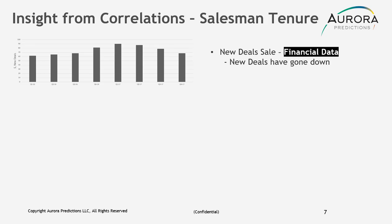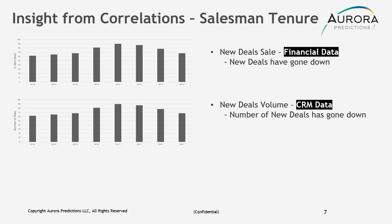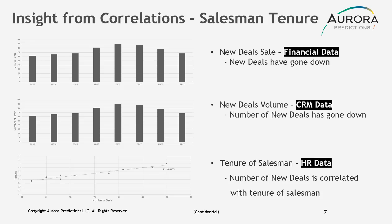Here we see new deal sales are declining — this is financial data. We can also see that the volume of new deals are declining — this is CRM data. Now we'll bring in HR data, in this case the tenure of salesman. What we can see is how well salesman tenure on the y-axis is correlated with the number of deals. The number of deals is highly correlated with salesman tenure, which makes sense since the products being sold are more technical in nature, and salesmen with higher tenure are better able to sell their product.